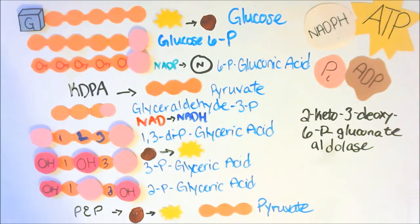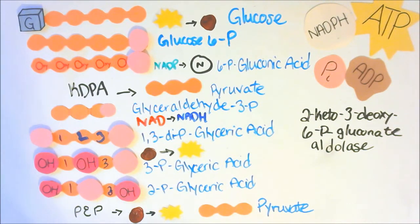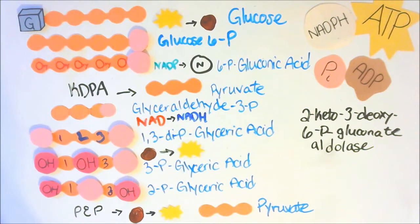In this video we'll be studying the Entner-Doudoroff pathway. I'm going to go through all of this and explain what all of the oranges, pinks, and reds mean. That will be our study time, and then the third part of this video is testing your knowledge on the ED pathway.